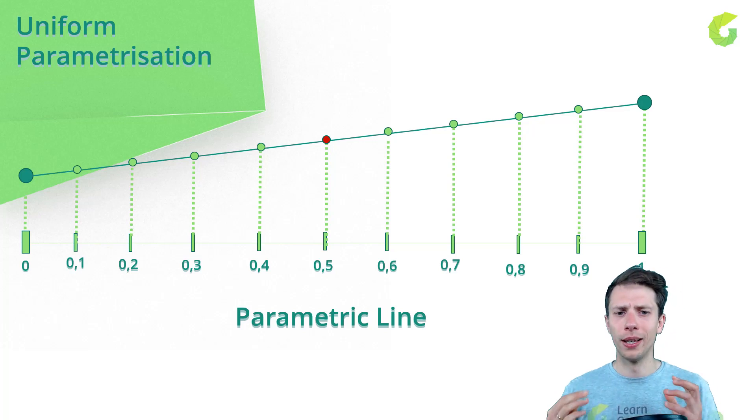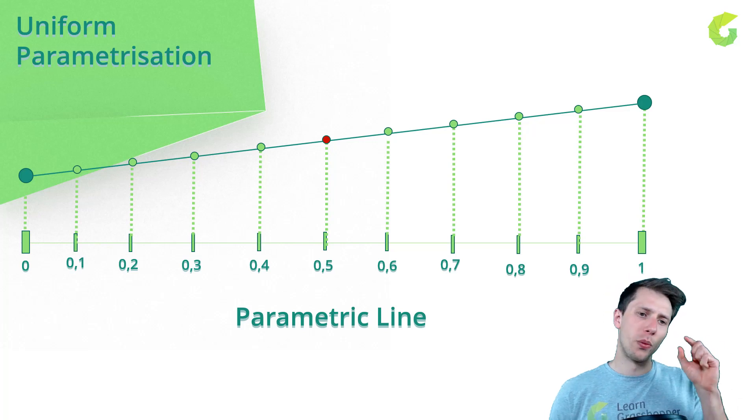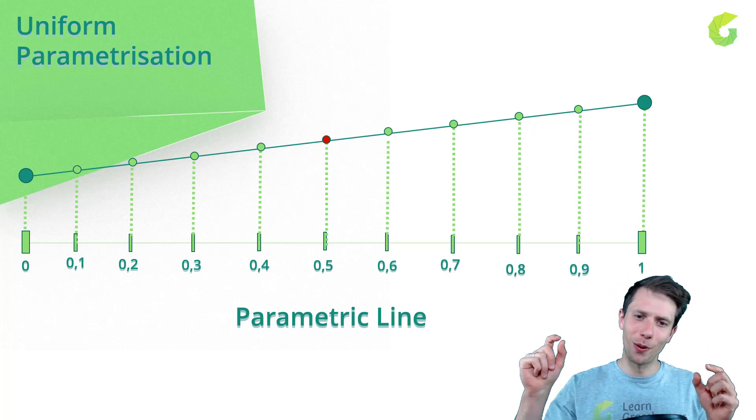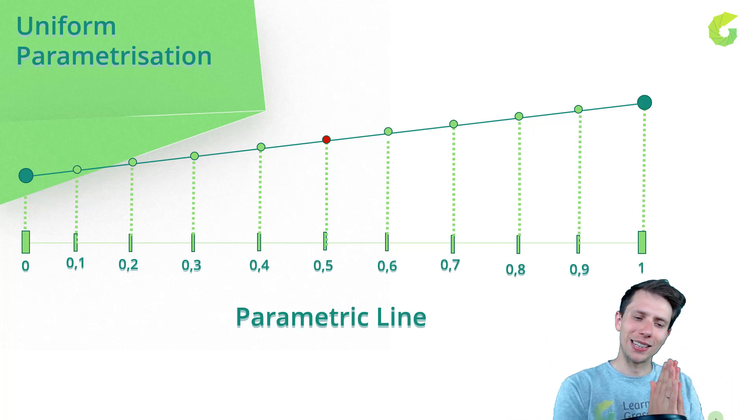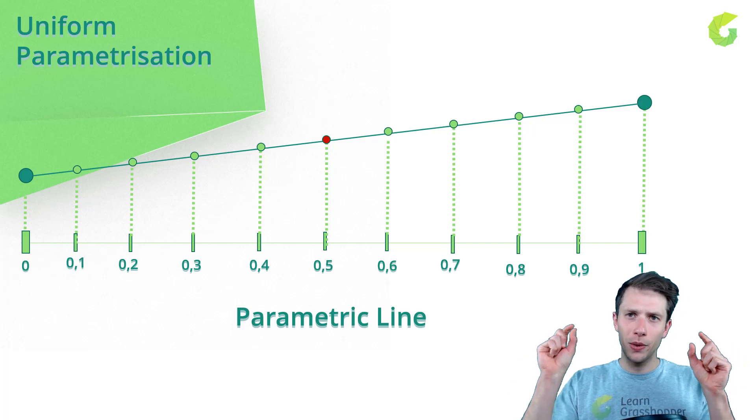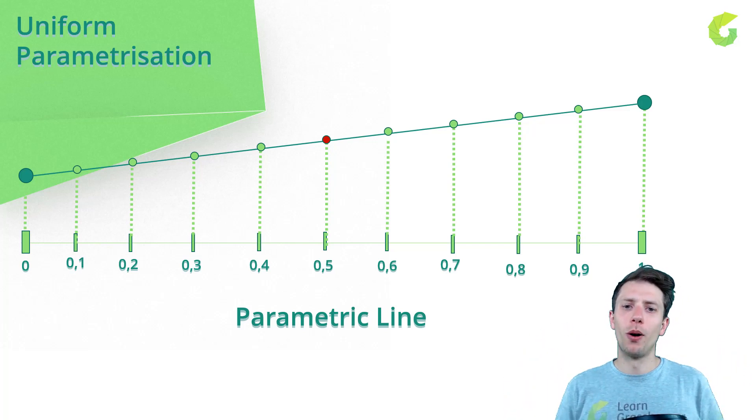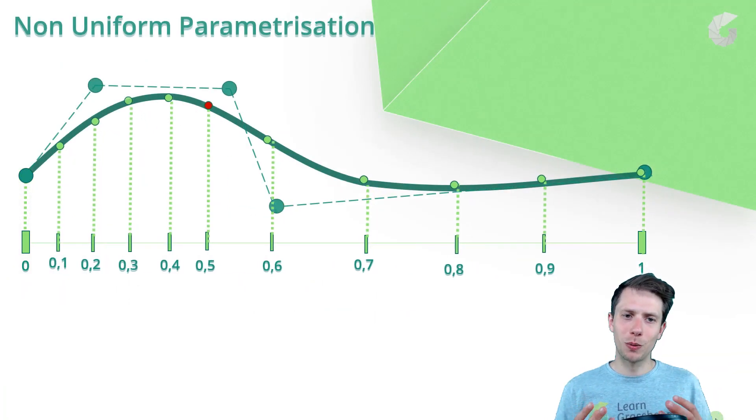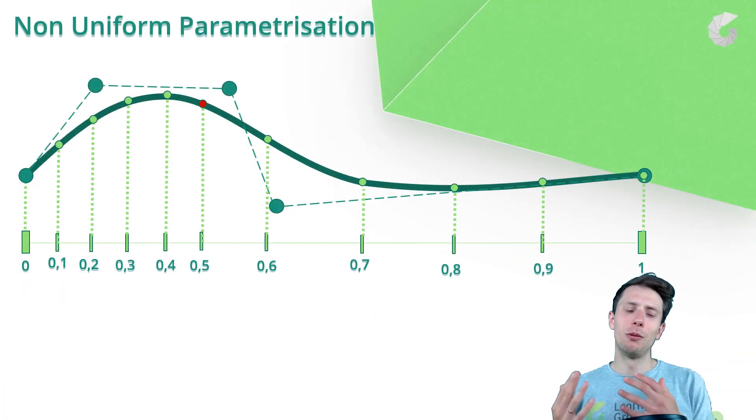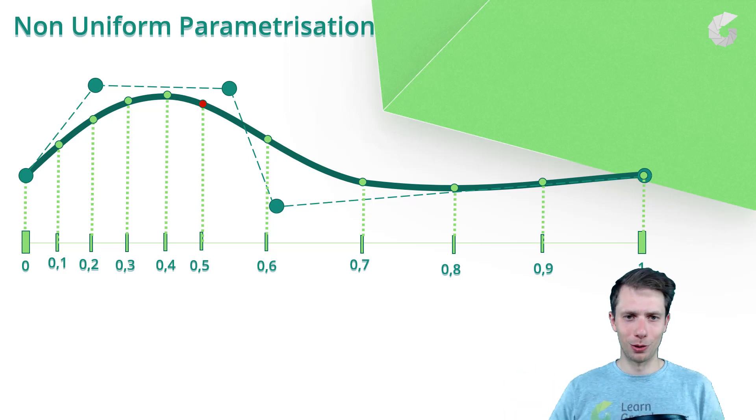So we have the degree equal to one. We have a line from one point to another point. Actually in the straight line we have equal distribution. If we think about control points, there's an equal distance between these two points. That's why when we come back to the previous example, it's not uniform parametrization.